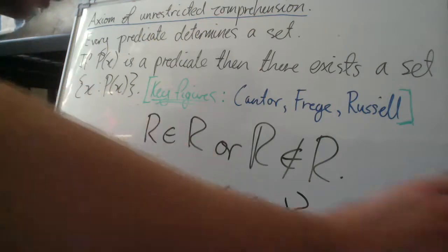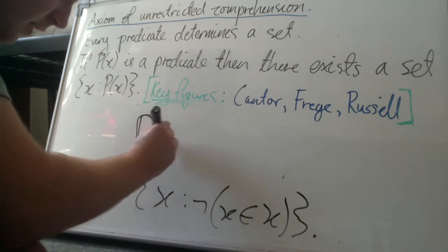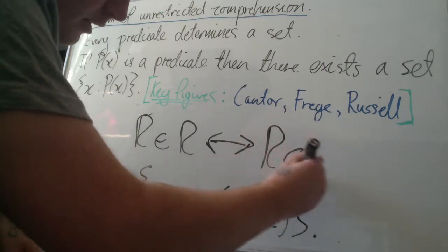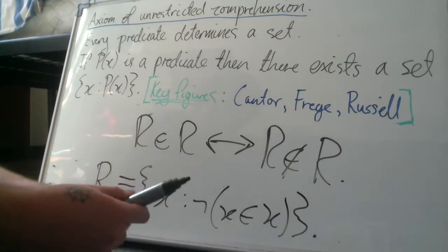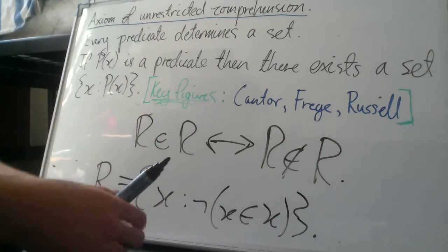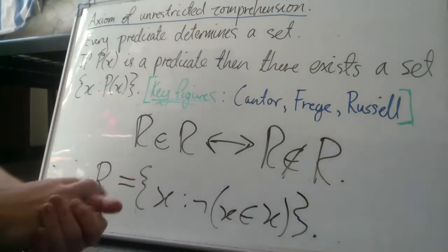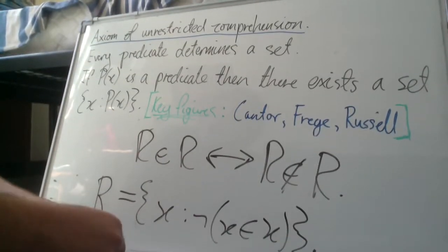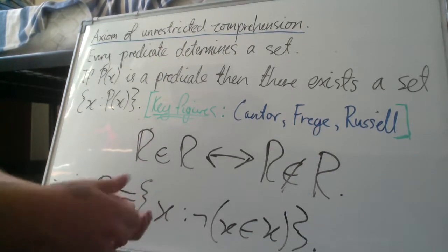So to write it a bit more symbolically, R element R is biconditional, if and only if R is not an element of R. I think that makes the contradiction a lot more obvious. So essentially we now have to blame some part of our formal system. And what is usually done is they blame the axiom of unrestricted comprehension. And so they change it a little bit, they create a new axiom called the axiom of restricted comprehension, which avoids this paradox as far as we're aware.